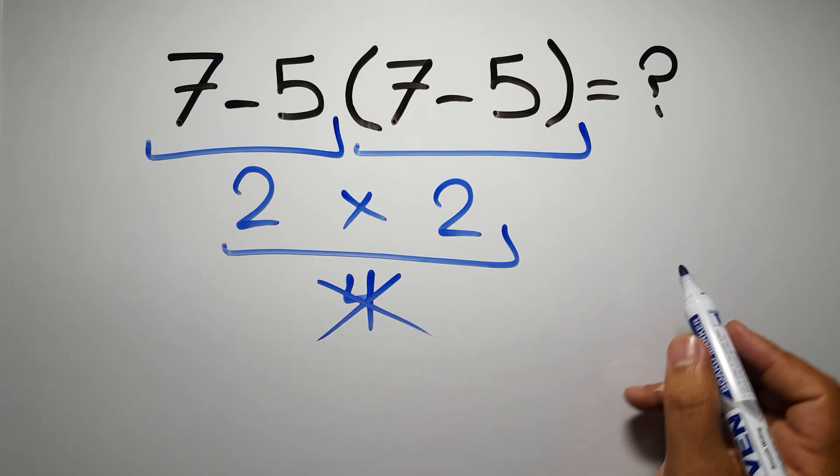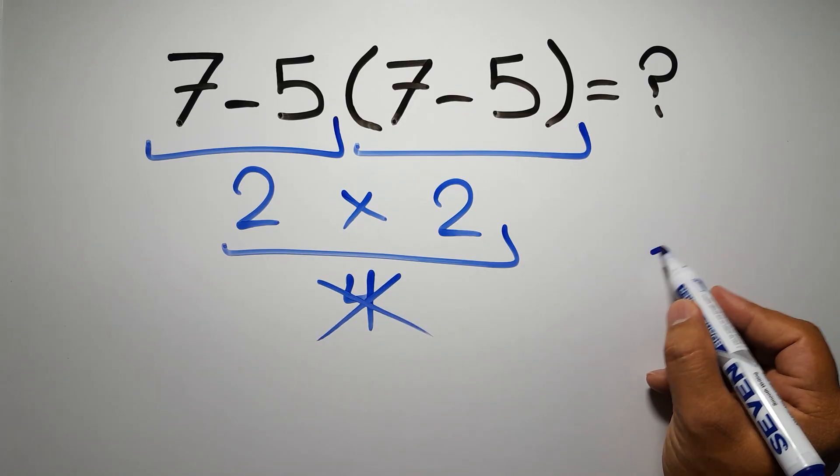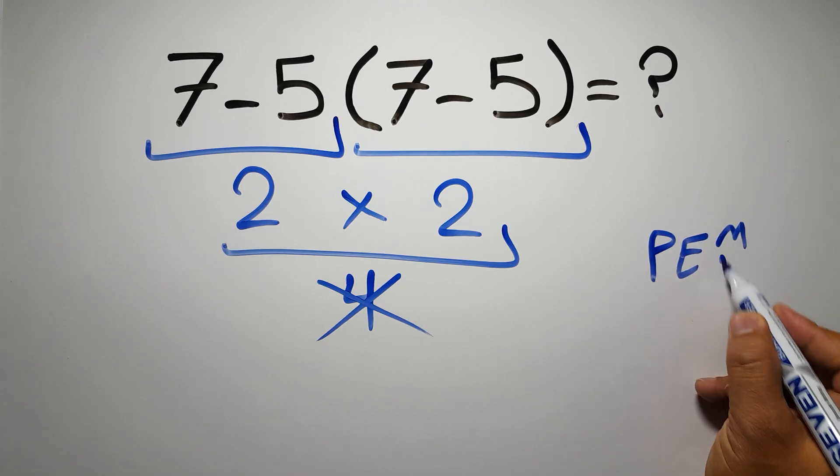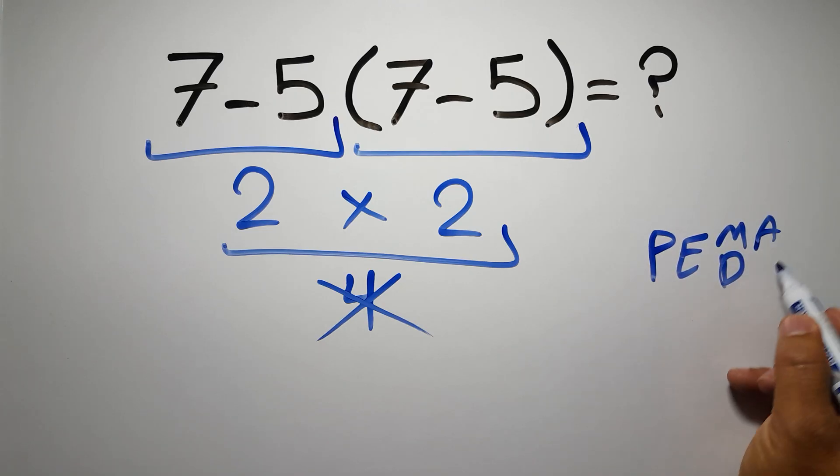because according to the rule of operations, first we have to do parenthesis, then exponents, then multiplication or division, and finally addition or subtraction,